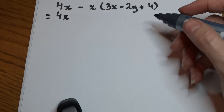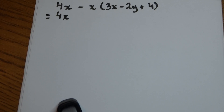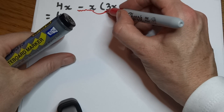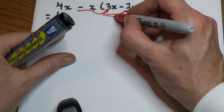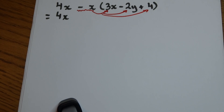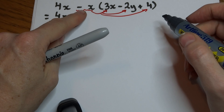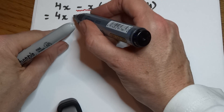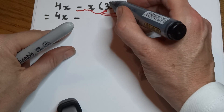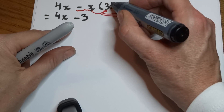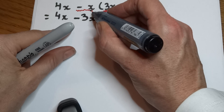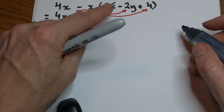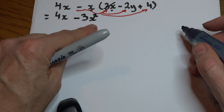Minus x times 3x is going to be our first expression that we're going to multiply. We're going to multiply this minus x by each of the terms inside the brackets, one step at a time. So the first thing we do is multiply minus x times plus 3x. A minus times a plus is going to be a minus. So we get minus 1 times 3 is 3, x times x is x squared, giving us minus 3x squared.